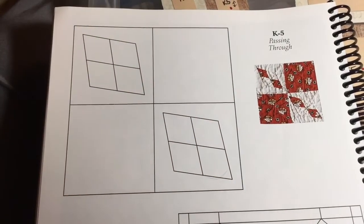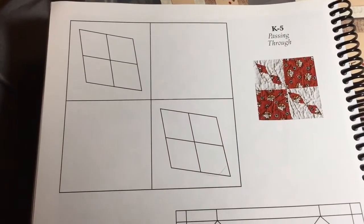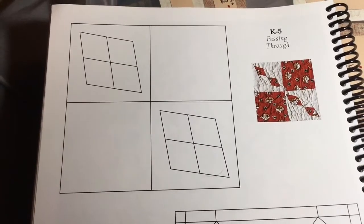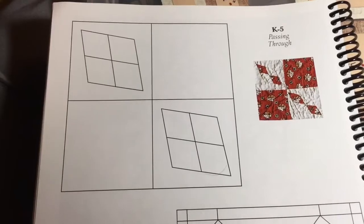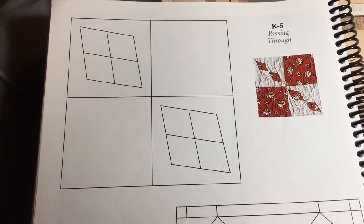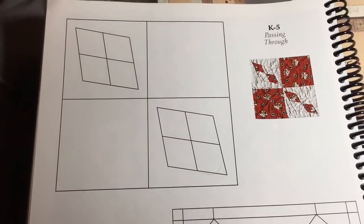We are moving right along and we're up to K5. The K row has been relatively straightforward so far and K5 is no exception. This is the 135th square of 169 of the entire quilt, so getting to the end.